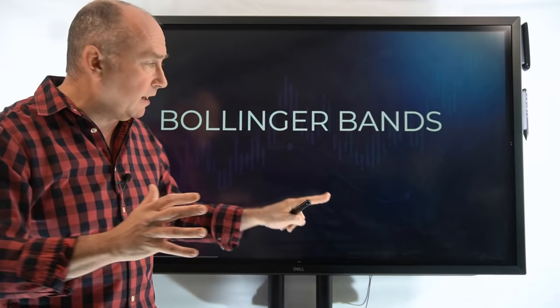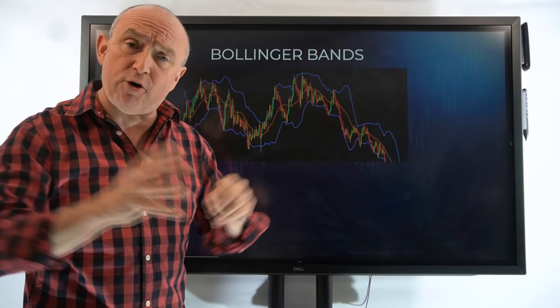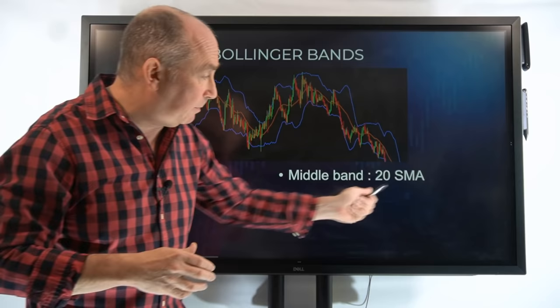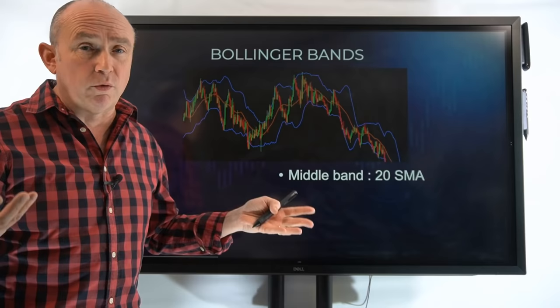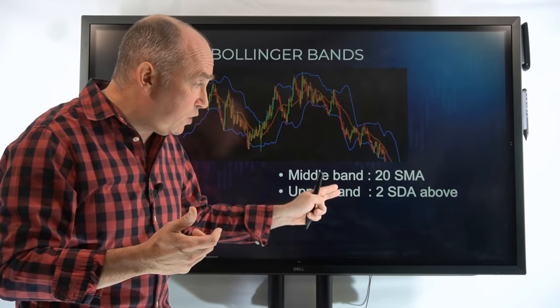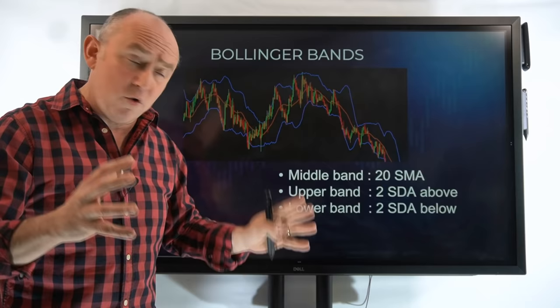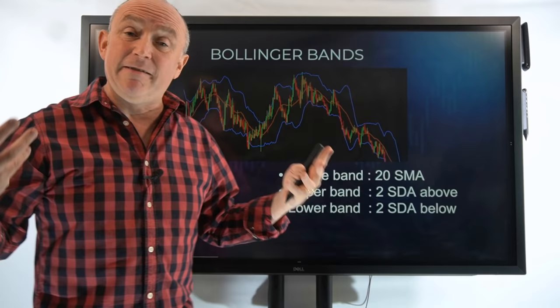So what exactly are Bollinger Bands? Basically they look like this on a chart, and they are comprised of three main lines. First of all, you've got the middle band, which is basically a simple moving average — the default most use these days is a 20 SMA, a 20-period simple moving average on the orange line going through the middle. Then you've got the upper band, which is two standard deviations above the center middle band, and the lower band, which is two standard deviations below the middle line — below the 20-period moving average.